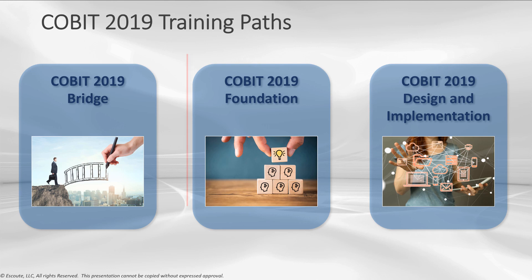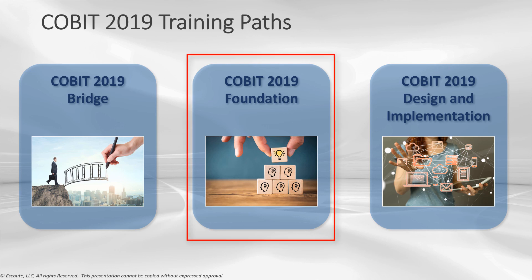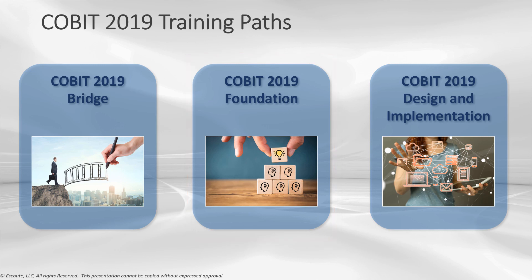The Foundation certificate covers eight key areas: framework introduction, principles, governance system and components, governance and management objectives, performance management, designing a tailored governance system, and business case and implementation. The exam is online and closed book, done through remote proctor. It covers eight domains and includes 75 questions. Exam takers are given two hours or 120 minutes to complete it. Each multiple-choice question has three options with only one correct answer, and a score of 65% or higher is required to pass.